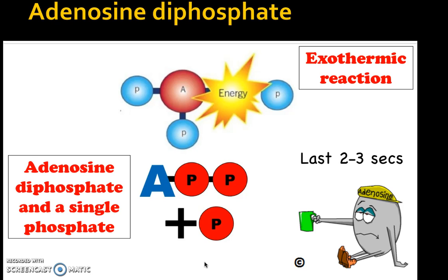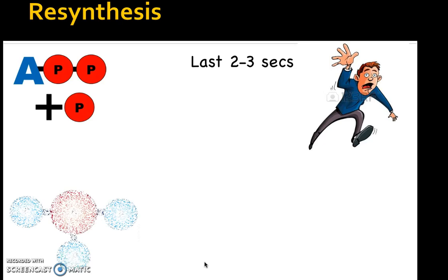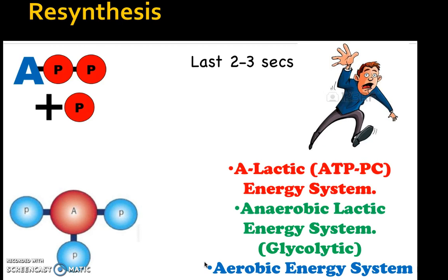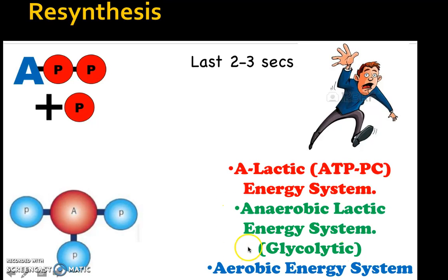This system only lasts about two to three seconds, so we have to find another way of resynthesizing — and that's the key term we use. The three different energy systems are: the ATP-PC system, the anaerobic lactic acid energy system (lactic acid), and the aerobic energy system, also known as the glycolytic system. Note that it can be called the glycolytic anaerobic energy system, though most commonly it's referred to as the lactic acid system.